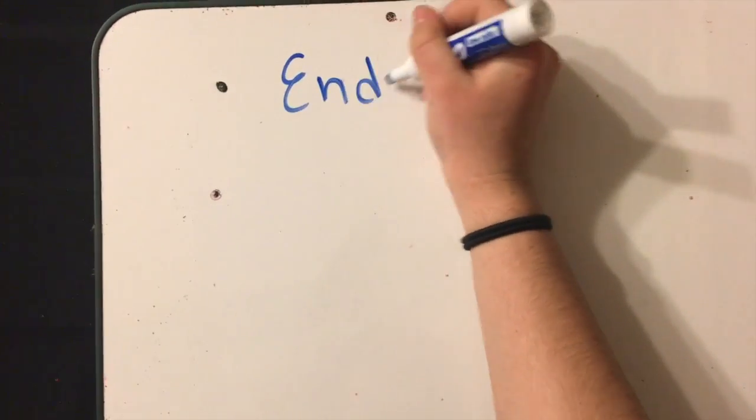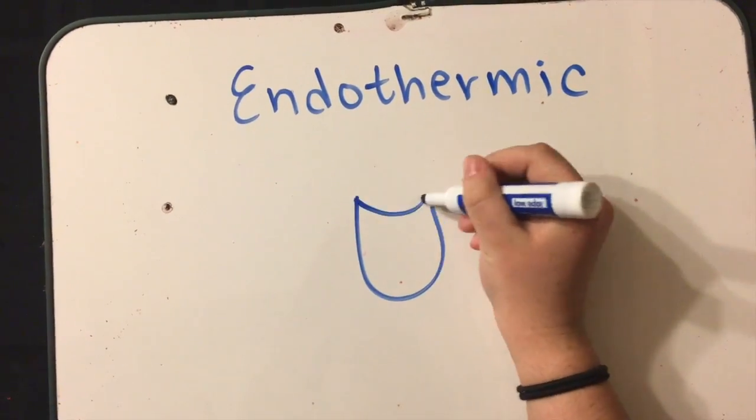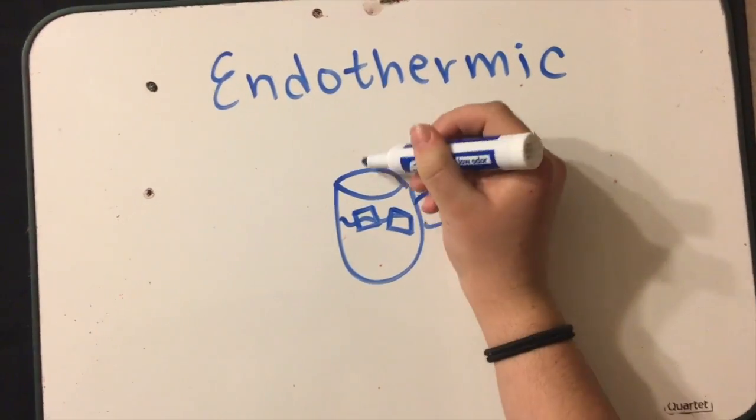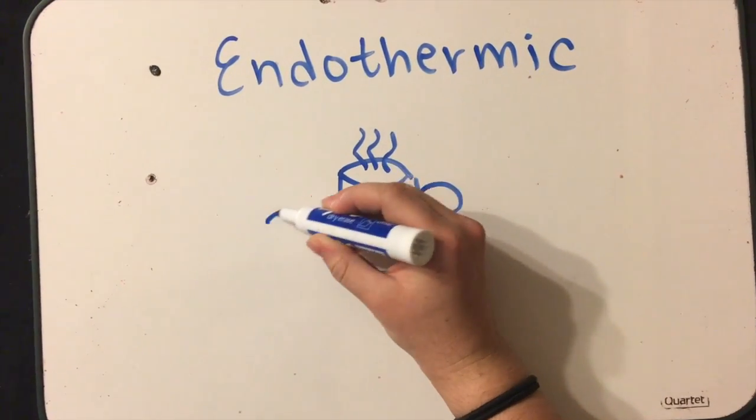Okay, first to start off, this is an example of an endothermic reaction. Just for this situation, we're going to have a mug of tea, hypothetically. We have a mug of tea which has the tea at a certain temperature, and ice cubes, also of a certain temperature, floating in the water.